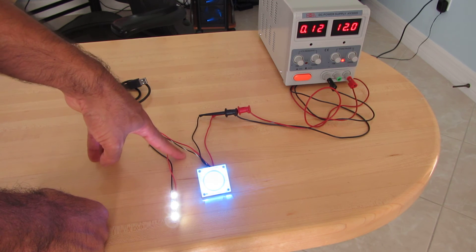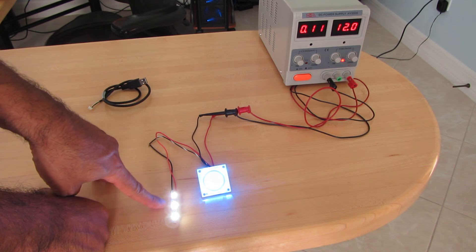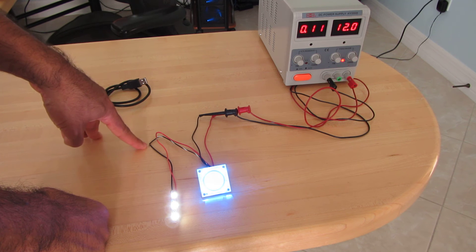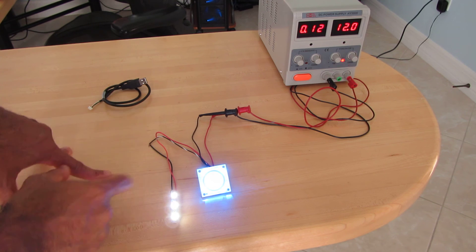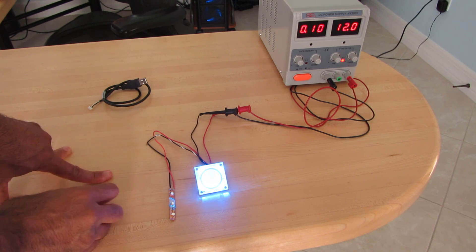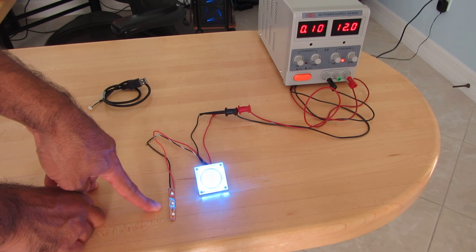The black wire with white stripe is your switched ground. So your load, if you connect your load to the negative side of your load to the black wire with white stripe, whenever we turn it off we're effectively removing ground from these lights. That's why they turn off.